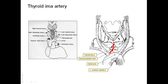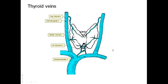The importance of this artery is that apart from providing an alternative blood supply to the thyroid gland, its presence in front of the trachea should be kept in mind because it might be a source of arterial bleeding that is difficult to control during tracheostomy.